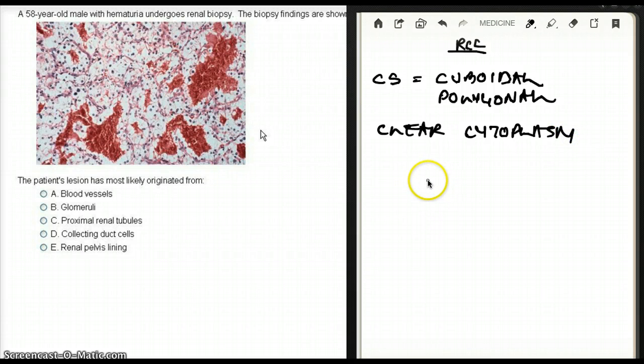There is going to be clear cytoplasm. The nucleus is going to be eccentric. Concentric means in the middle, eccentric means kind of on the side. So they are going to have eccentric nuclei.